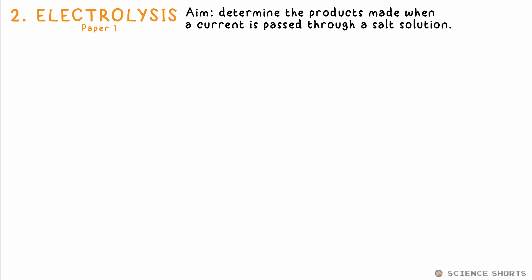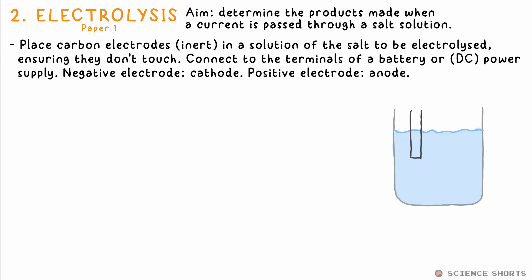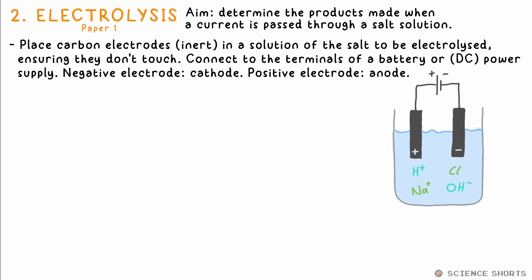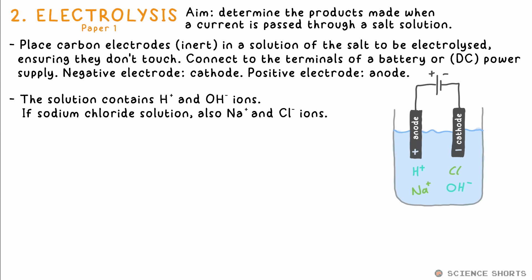Chem 2: electrolysis — causing a chemical reaction using electricity. We put the solution, say sodium chloride solution, in a beaker. We get two carbon electrodes — they're inert, they won't react — and put them in the solution, making sure they don't touch. We connect them with crocodile clips and cables to a power supply or battery. The electrode connected to the positive terminal, usually red, is the anode. Negative, black, is the cathode. We have a mixture of Na⁺, Cl⁻, H⁺, and OH⁻ ions.